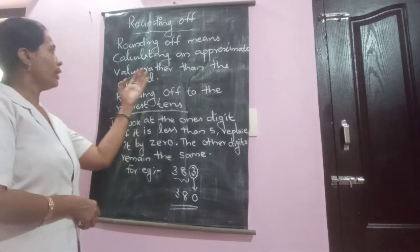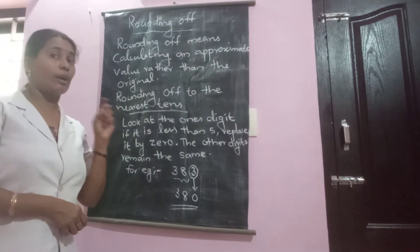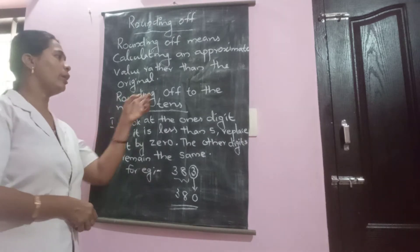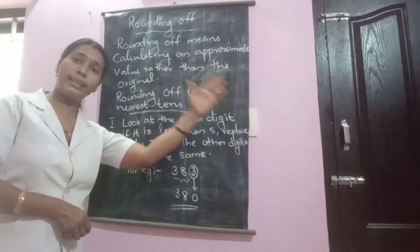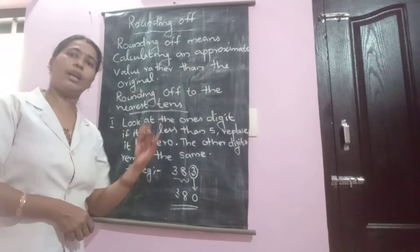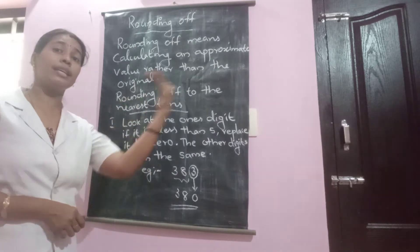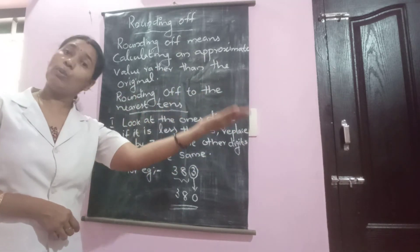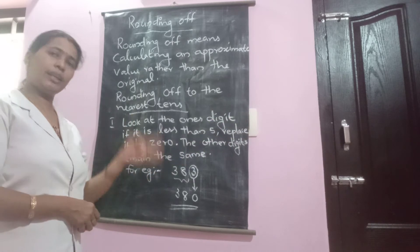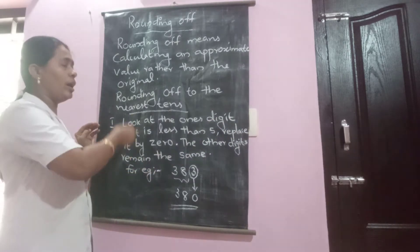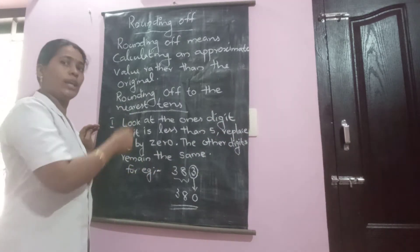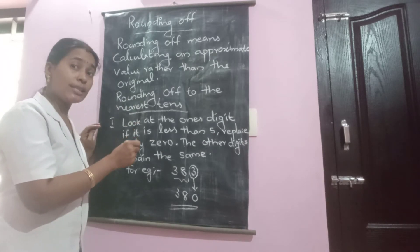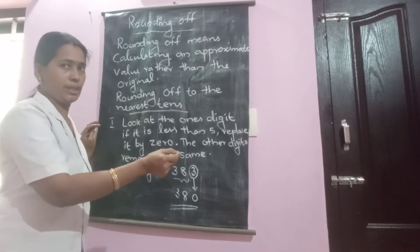Here we have to consider rounding off to different cases. That is rounding off to nearest tens, rounding off to nearest hundreds, and similarly rounding off to nearest thousands. But here we are going to study about how we can round off the given number to the nearest tens first.